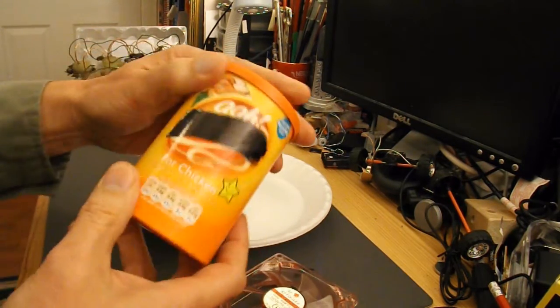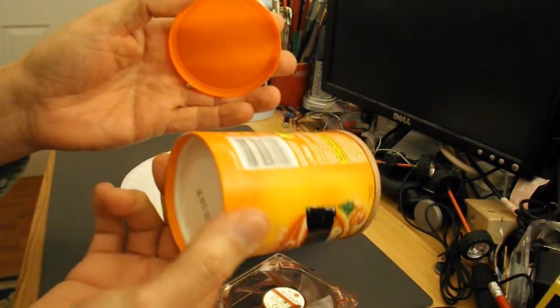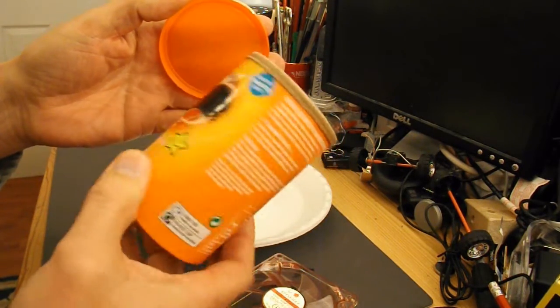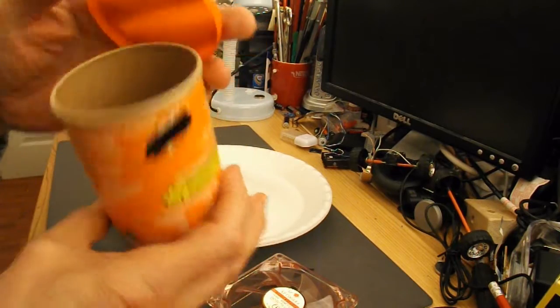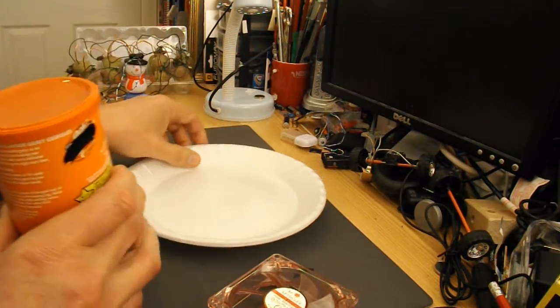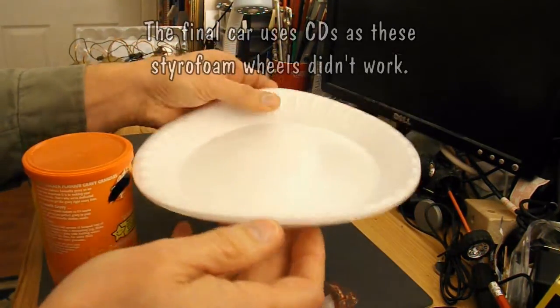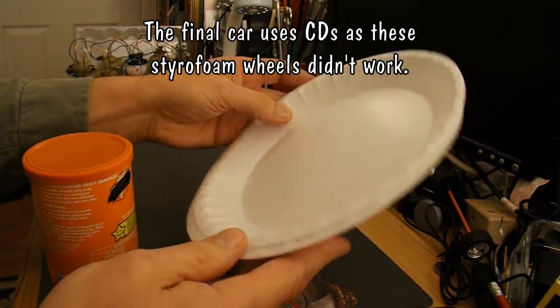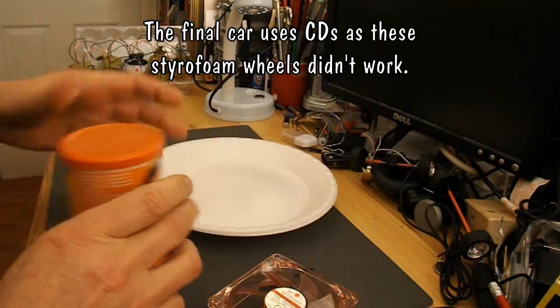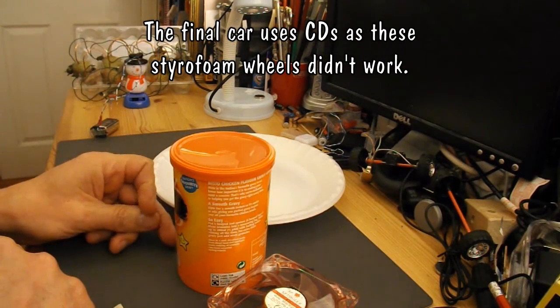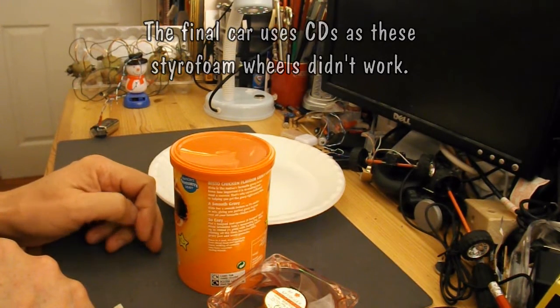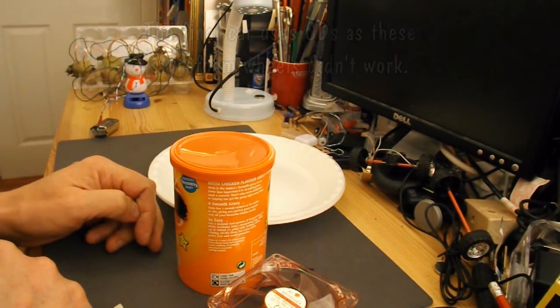I'm going to make the body out of this cardboard tub that used to have some well-known gravy granules in it. And to keep it light, I'm going to make some wheels out of these styrofoam plates. I expect I'll use barbecue skewers for the axles and straws for the axle tubes, and that should be it.